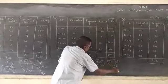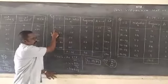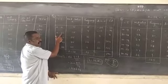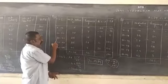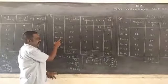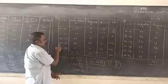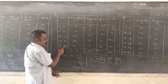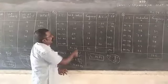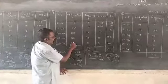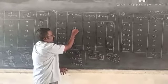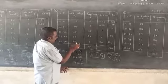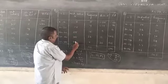10 plus 20 by 2 equal to 15. 20 plus 30, 30 by 2 equal to 25. 30 plus 40, 70 by 2 equal to 35. 40 plus 50, 90 by 2 equal to 45.